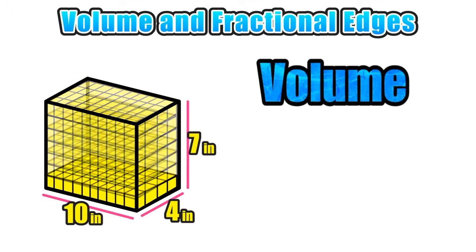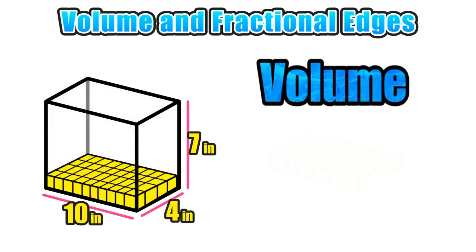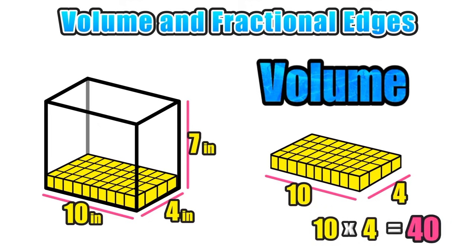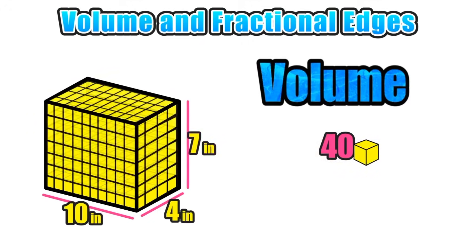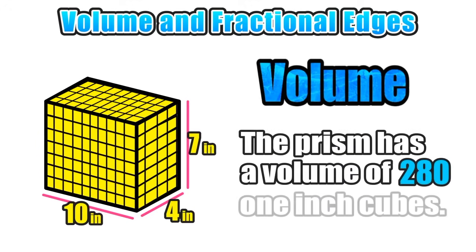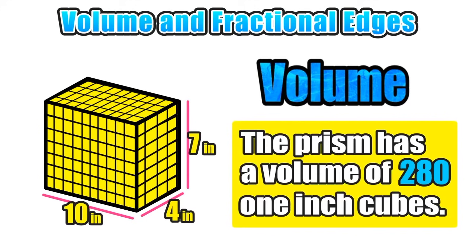Let's imagine we only use those 1-inch unit cubes to fill the bottom layer of this rectangular prism. To fill this bottom layer, we would need 10 cubes along the length and 4 cubes along the width — basically 4 rows of 10 unit cubes. To find the total number of cubes in that bottom layer, we multiply 10 times 4, which gives us 40. To determine how many of these 40-cube layers it would take to fill the entire prism, we look at the height, which is 7 inches. So we multiply 40 times 7, and our product of 280 represents the total number of unit cubes needed — giving us a volume of 280 cubic inches.